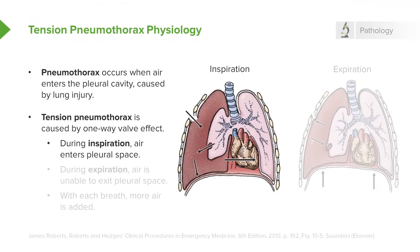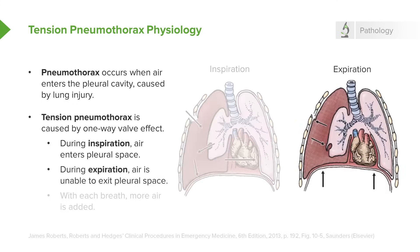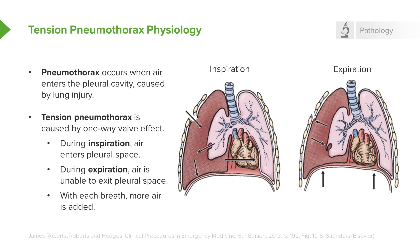A tension pneumothorax is a special subtype that occurs when there is a one-way valve effect in the pleural space. During inspiration, the patient sucks air through the trachea, through the lung, and out into the pleural space. But during expiration, that one-way valve slams shut and the air cannot escape. With each breath, more and more air accumulates in the pleural space, creating a large, high-pressure air collection.